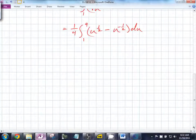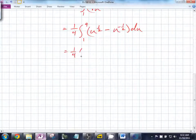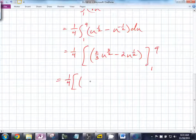You end up with 1 fourth, the integral from 1 to 9 of 2 thirds u to the 3 halves minus 2 u to the 1 half from 1 to 9. So when we plug this in, we get 1 fourth parentheses, so we plug in 9, so it's 2 thirds of the square root of 9 cubed, which is 27, minus 2 times the square root of 9, which is 6. Minus 2 thirds minus 2.